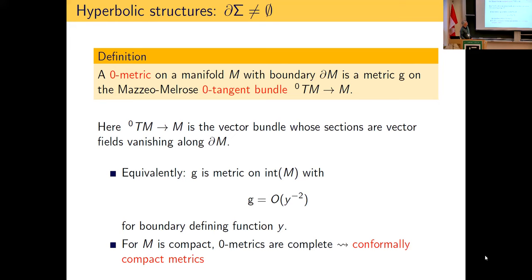A zero metric is a metric on the zero tangent bundle — equivalently, a metric on the interior of the surface which, as you approach the boundary, goes like 1/y². It was shown by Mazzeo that if the manifold is compact these zero metrics are always complete; for that reason they're also called conformally compact metrics. He mostly studied them in the higher-dimensional case, but there is also a good reference treating zero metrics on surfaces: a book by David Baldi.